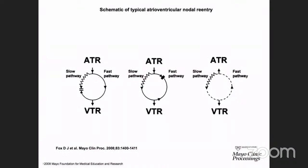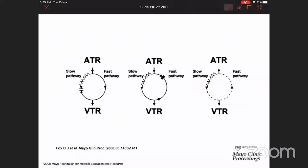For reentry to occur, two essential conditions must be satisfied. First, there should be two pathways conducting at different speeds — a fast pathway and a slow pathway. Second, there should be a prematurely timed beat — a premature atrial complex. Even if you have two conducting pathways, nothing unusual will happen with a normal beat. Both fast and slow pathway impulses collide and cancel each other out, so conduction exclusively occurs via the fast pathway in normal circumstances.